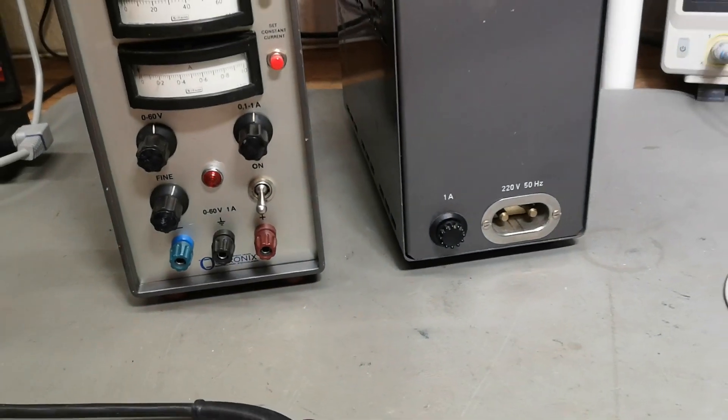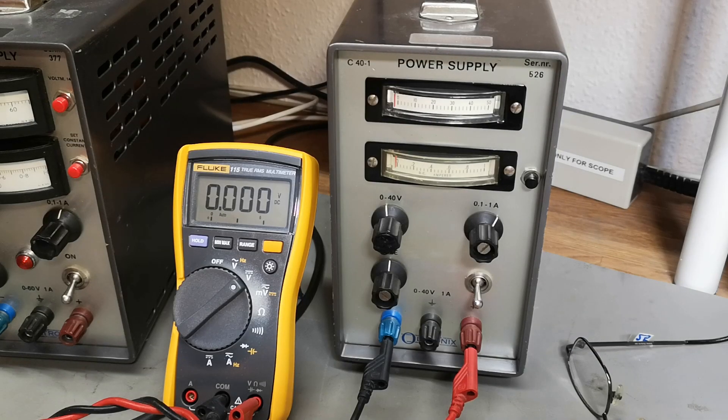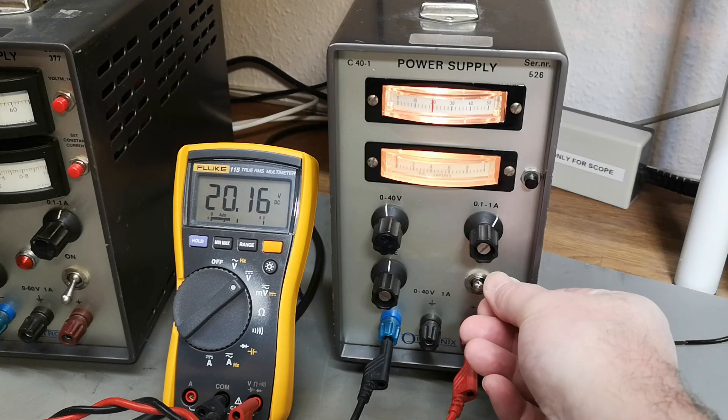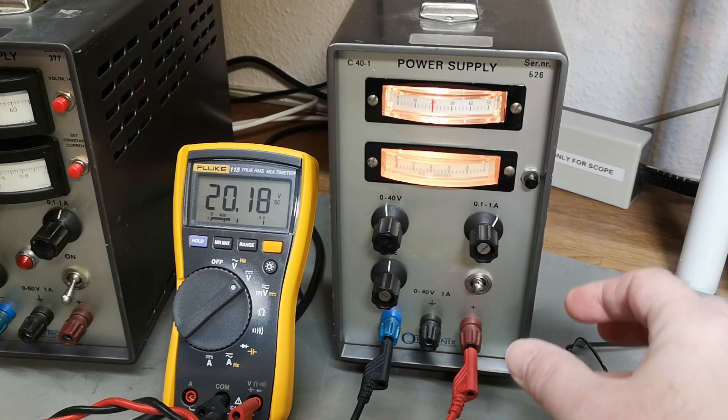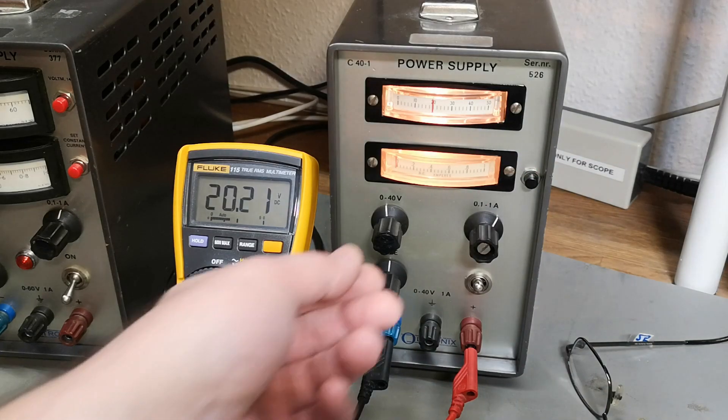So I do dare to power this up and see if it works. Let's do the first power up. Mains is applied, nothing bad happened, and we got output voltage. Bright light, and it is working. 44 volts of output. All this is really nice.